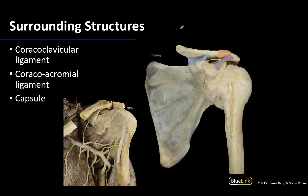Let's discuss accessory structures associated with these joints, starting with the coracoclavicular ligament. The name gives you all the clues regarding where it's located — between the coracoid process of the scapula and the clavicle. It is a rather robust ligament, shaded in light blue here. You can see it on this image: the coracoid process is right here, this is the clavicle, and so right here would be the coracoclavicular ligament.